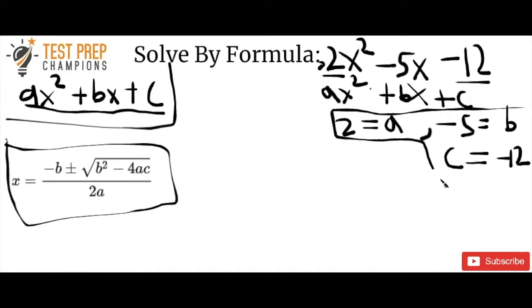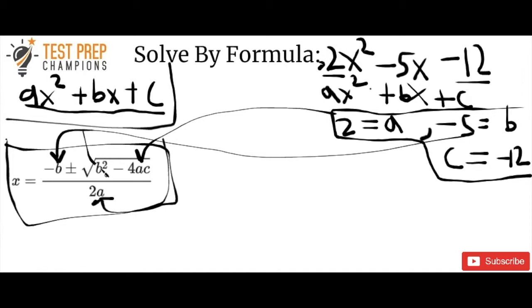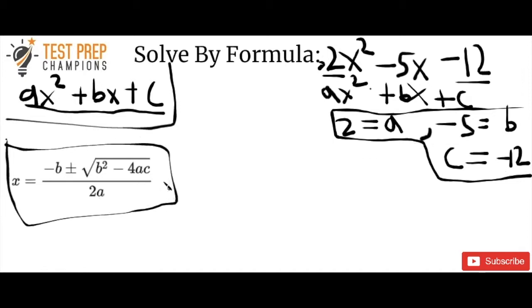Now we've got to do some mathematical work. We're going to substitute each of these values: the 2 goes into the formula where we see a, negative 5 for b goes where we see our b's, and negative 12 for c goes right in for c. We'll use order of operations rules to do this and it's going to give us our answers. We're going to have to do this for plus and for minus. So let's start with plus. The opposite of b — since b is negative 5, the opposite of negative 5 is positive 5.